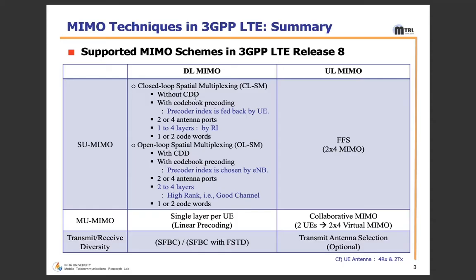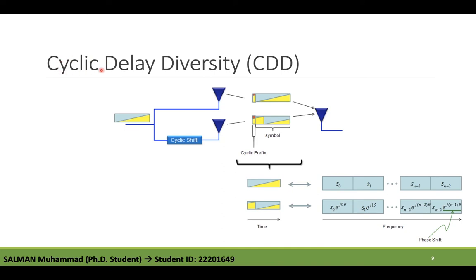CDD stands for Cyclic Delay Diversity. It is a transmit diversity mechanism implemented by applying different phase delays for each OFDM subcarrier. It is used in spatial multiplexing to increase diversity between two spatial paths — one antenna transmits the original data copy while the other transmits the cyclic-shifted version. A cyclic shift in the time domain produces a phase shift for each symbol in the frequency domain, generating the same effect as frequency diversity.